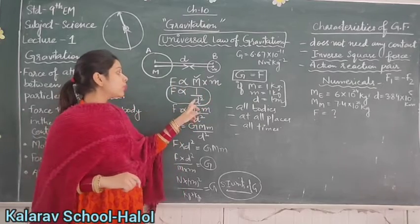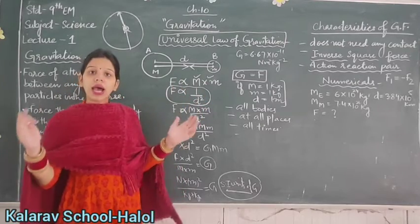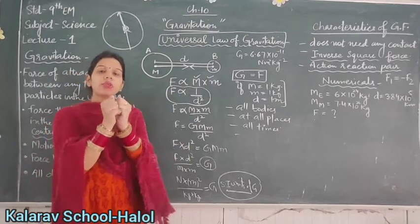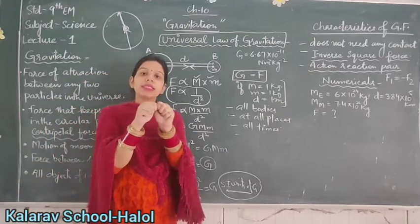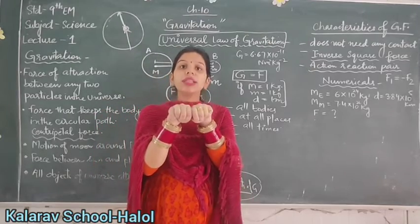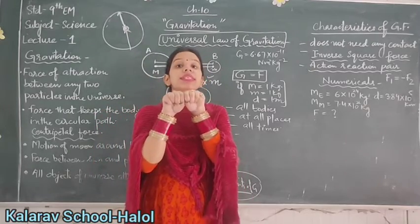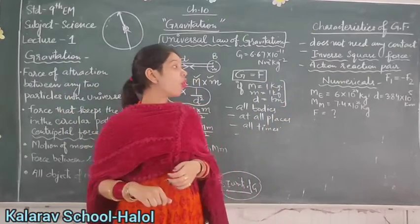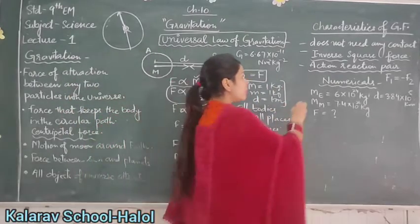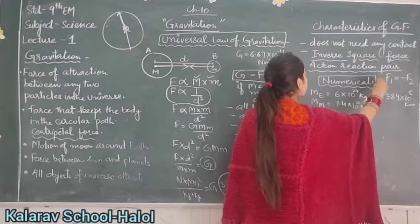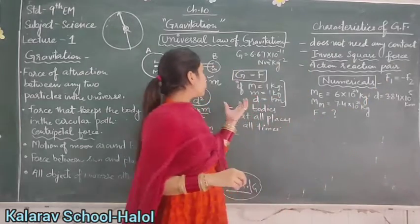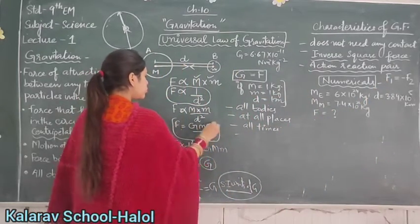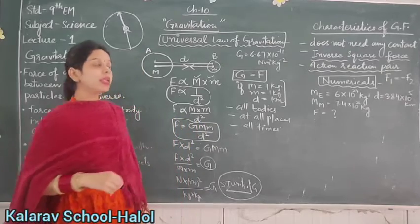If the distance between two particles is large, then the force is small. If the distance is small, then the force is large. Next, we will do a numerical using the formula F = G×M×m / D².